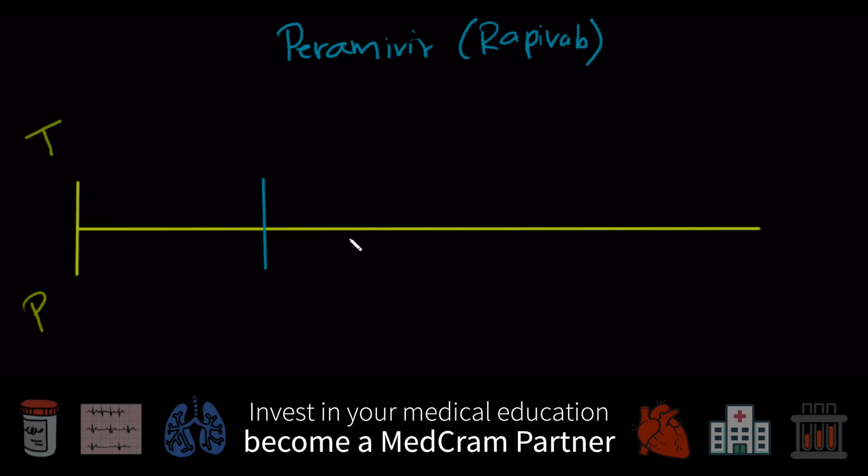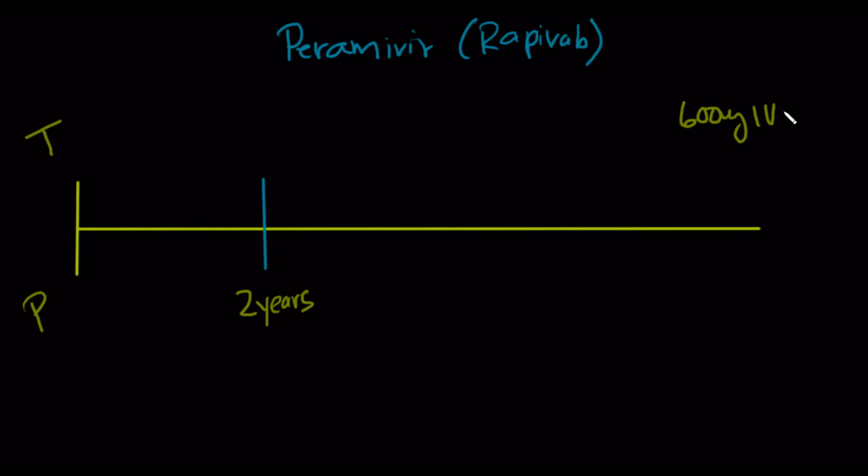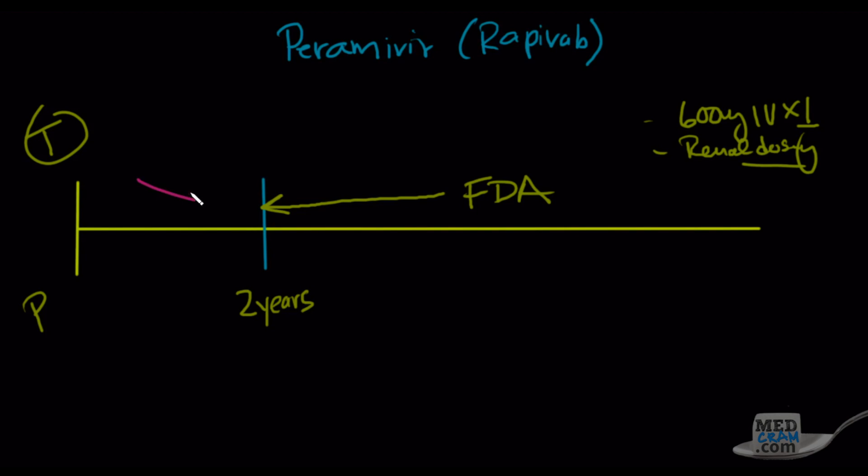Let's talk about the last neuraminidase inhibitor, and that one is peramivir, otherwise known as Rapavab. For this one, the division is pretty easy to understand. We've got treatment here on the top and prophylaxis on the bottom. The FDA cutoff here is two years, and the dose is actually 600 milligrams IV times one dose. You've got to be careful because there is renal dosing that you've got to look up. FDA approves the use of this medication all the way down to two years of age for treatment purposes. Below that age, there is no recommendation. And furthermore, there is no recommendation to give this intravenously for prophylaxis.